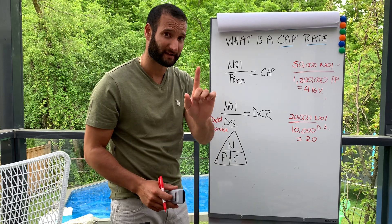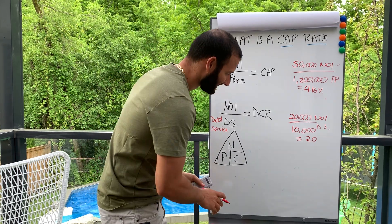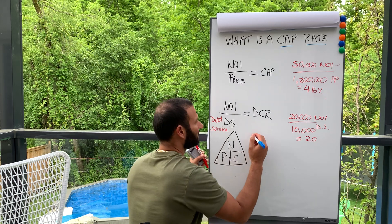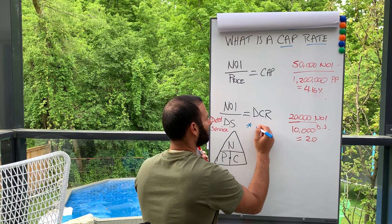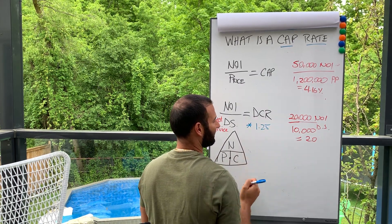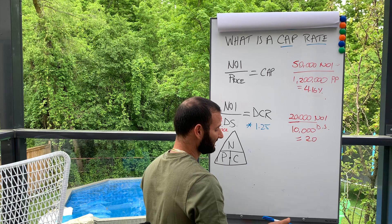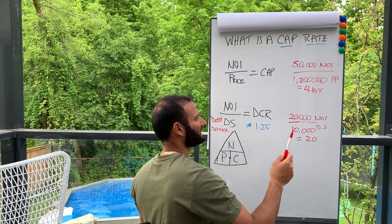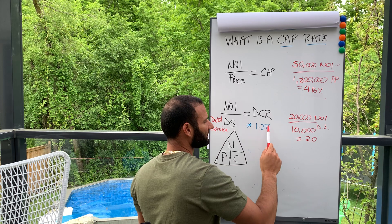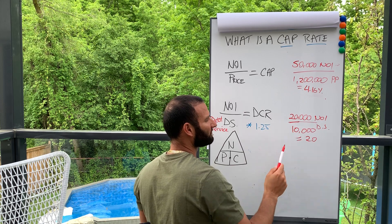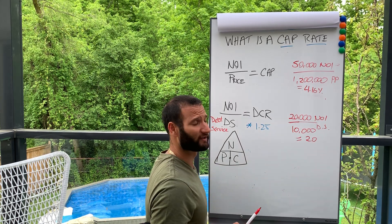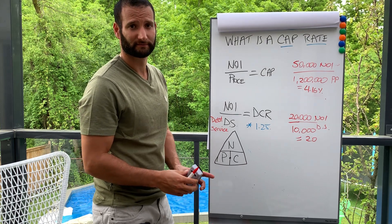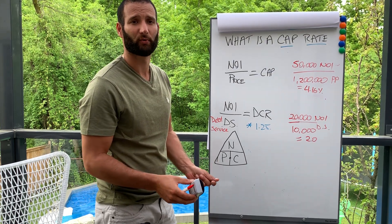The bank is usually looking for a DCR of 1.25. Another way of saying that: if your net income is twenty-five percent more than your debt service, you've got a good property and the bank will lend.